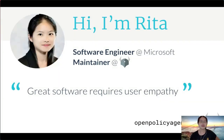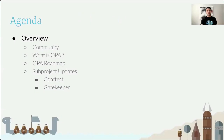I'm Rita. I'm a software engineer at Microsoft, and I'm also a maintainer of the OPA Gatekeeper project. I'm a firm believer that great software requires user empathy. In today's talk, we'll learn a bit about the Open Policy Agent, its features, we'll look at its roadmap, and then we'll get some updates from subprojects like ConfTest and Gatekeeper. So let's get started.